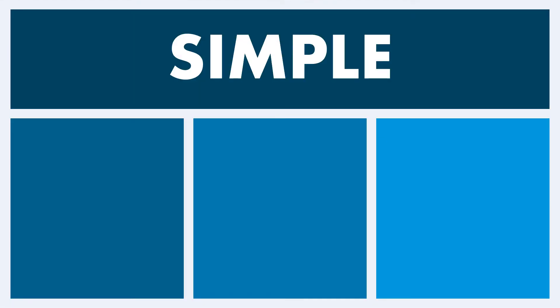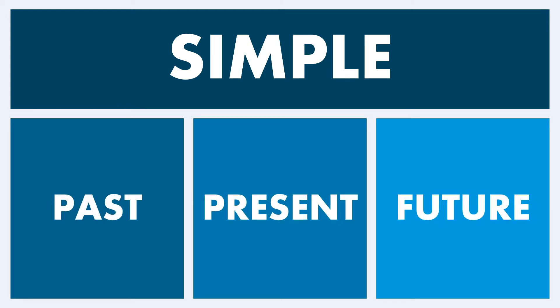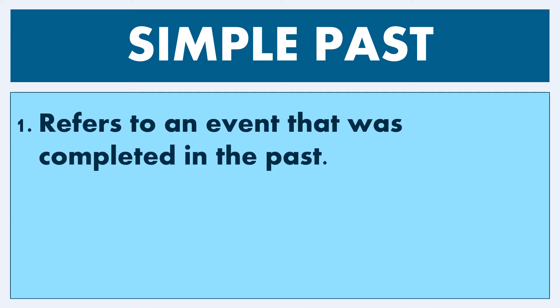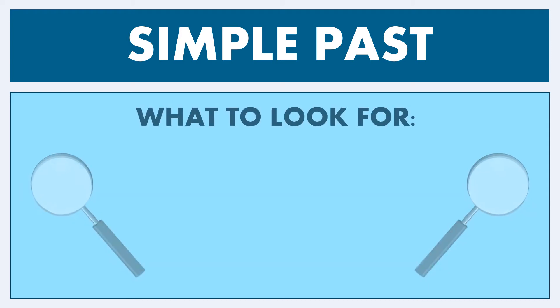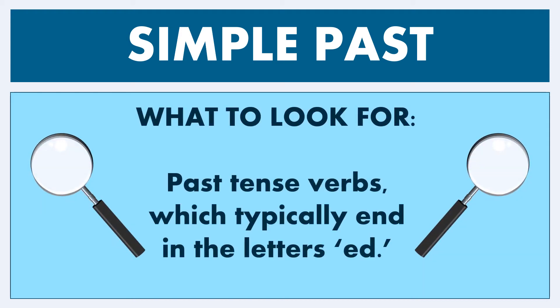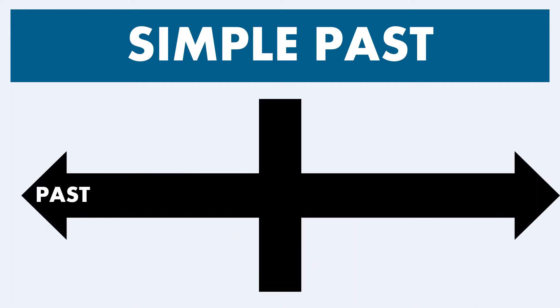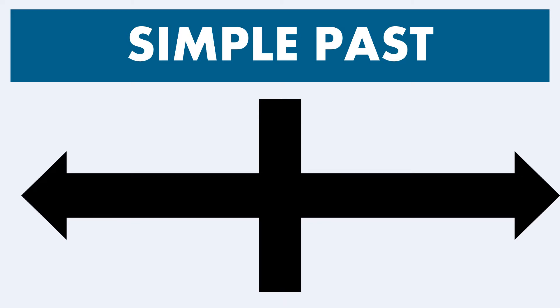Within the context of the simple mood, there are three tenses: past, present, and future. Let's begin with simple past. This refers to an event that was completed in the past, or it refers to actions and/or events that were completed but the implications of which are no longer applicable. We're going to look for a past tense verb, which typically ends in -ed, although there are irregular verbs where that is not applicable. On the timeline, the simple past event is one standalone event that took place in the past, illustrated by a red star.